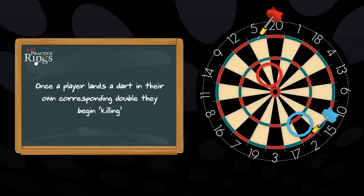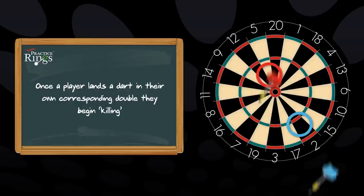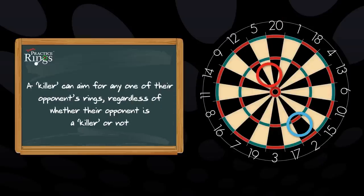Once a player lands a dart in their corresponding double, they begin killing. A killer can aim for any one of his opponent's rings, regardless of whether they are themselves a killer or not.